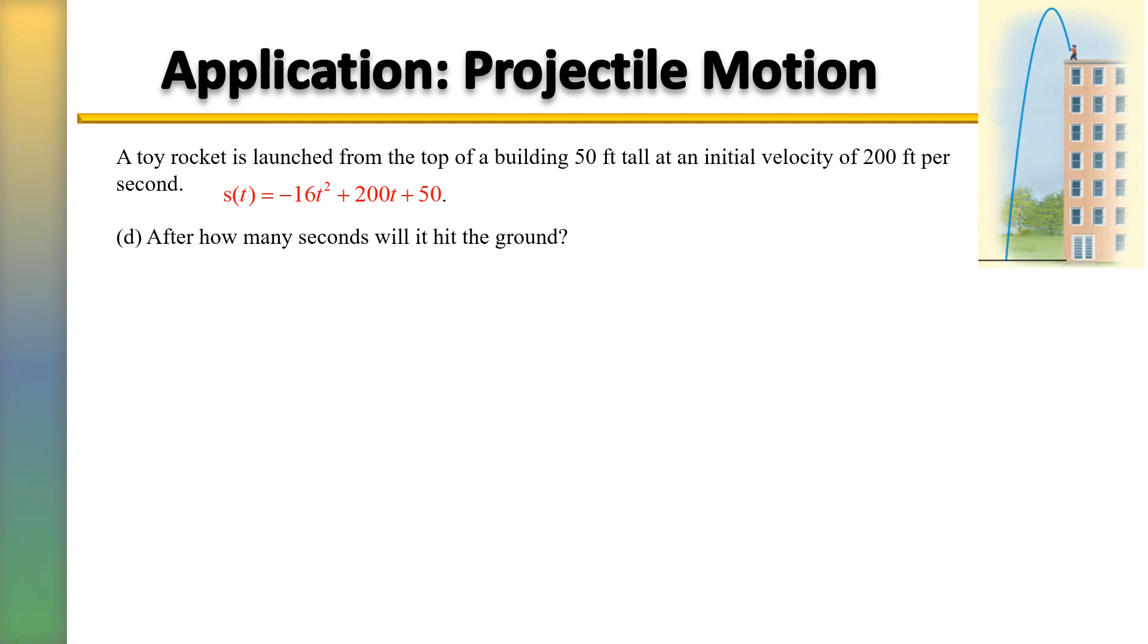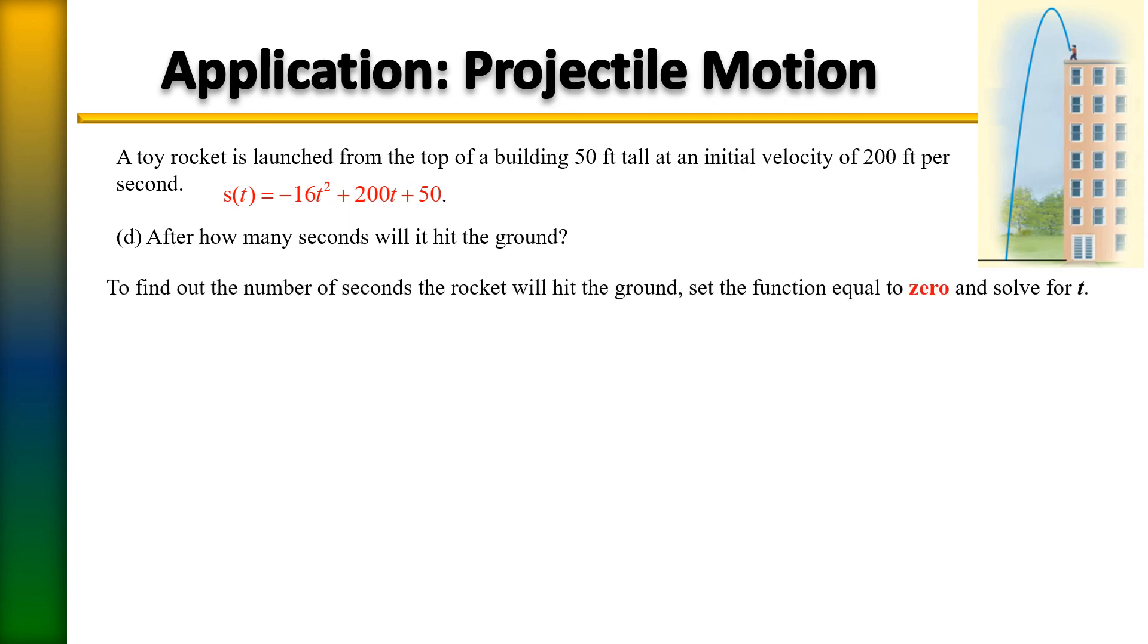The last part of this problem, part D, after how many seconds will it hit the ground? Now, anytime you're talking about the ground, you're talking about at zero level. So all you need to do in this case is take your equation and set it equal to zero and solve for t, the time. So the first thing we're going to do here is go ahead and use the quadratic formula just as we did before. In this case, A is negative 16, B is 200, and C is 50. Same thing. You're going to plug it into the quadratic formula. Simplify your answer.